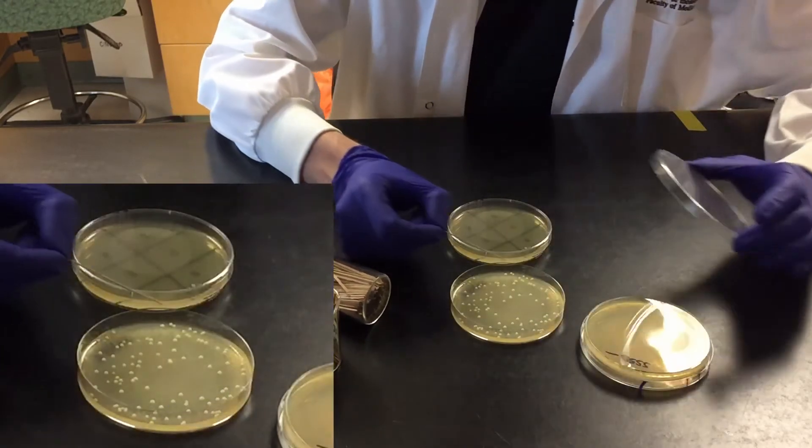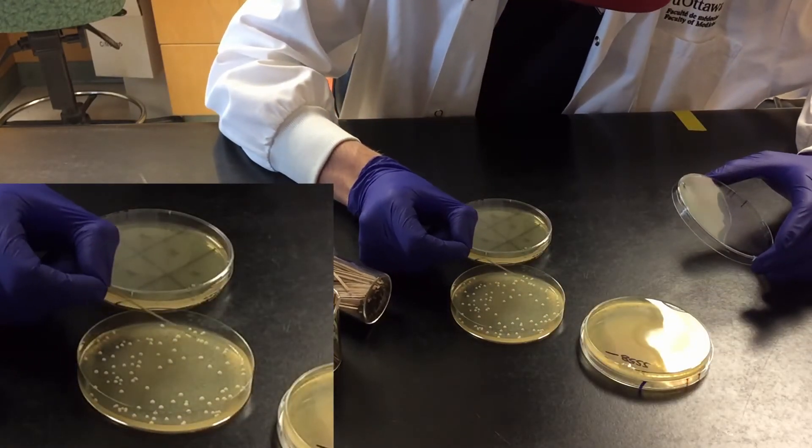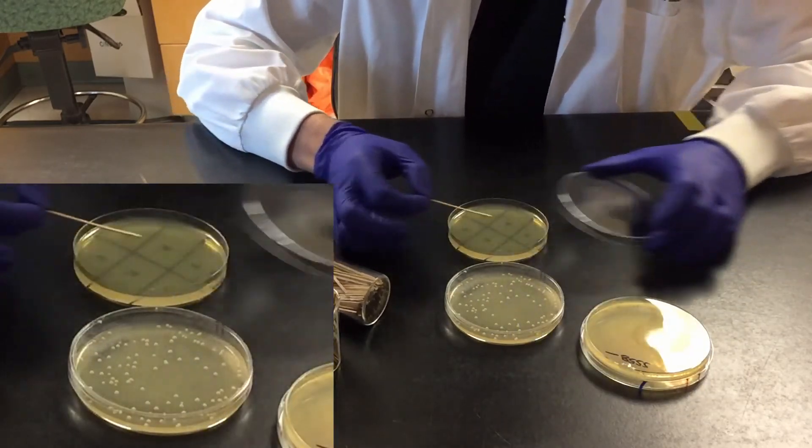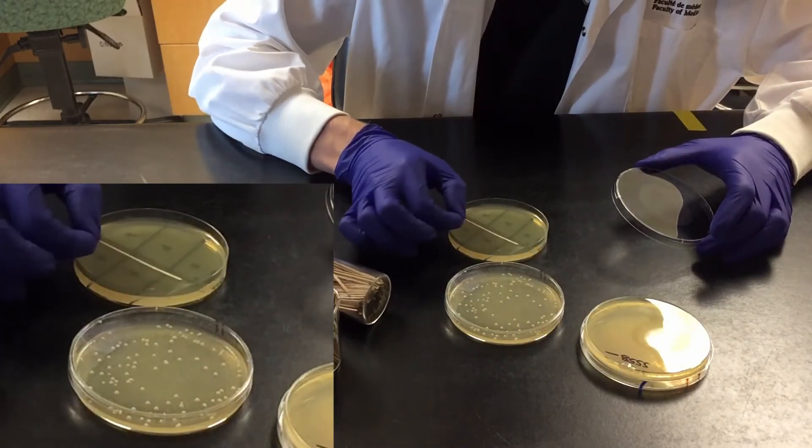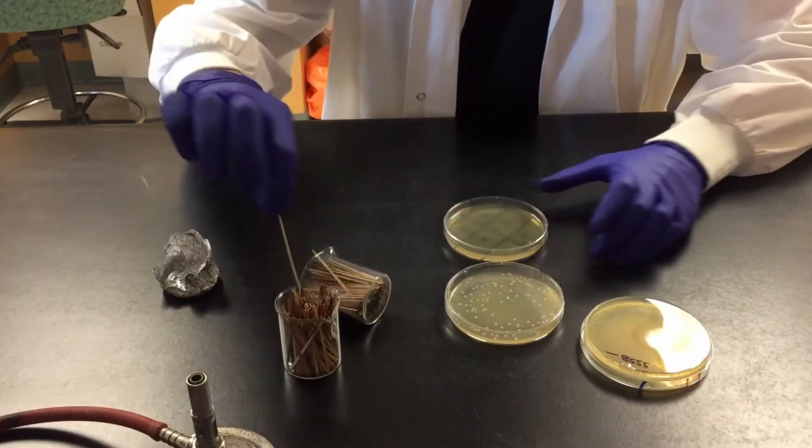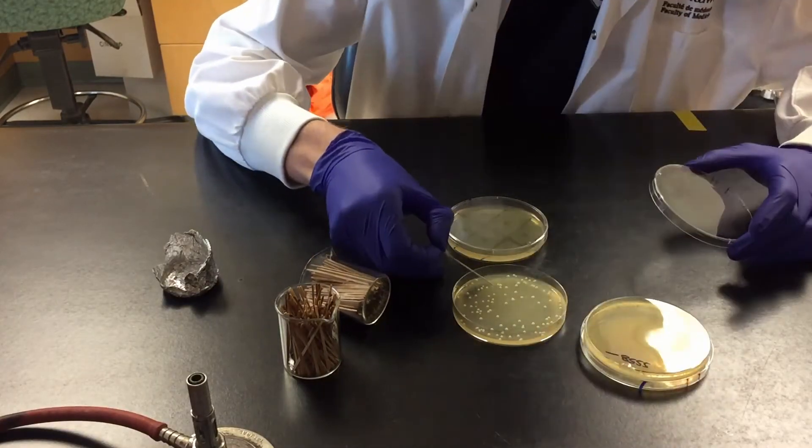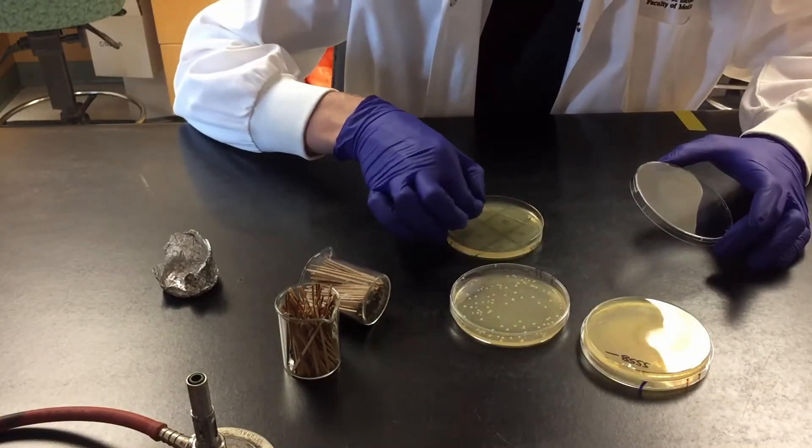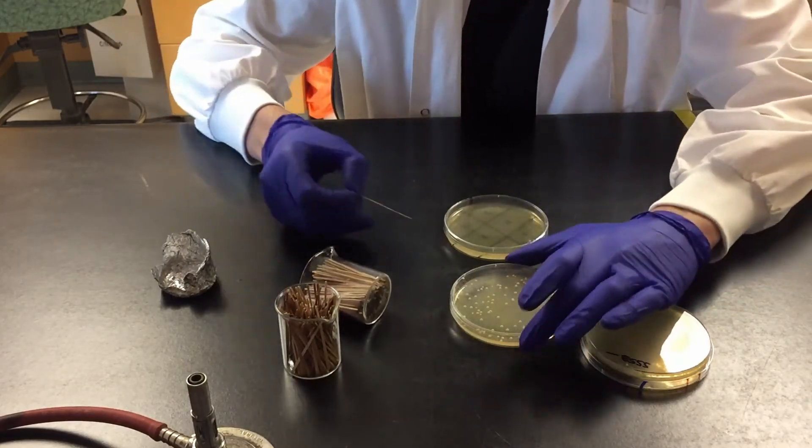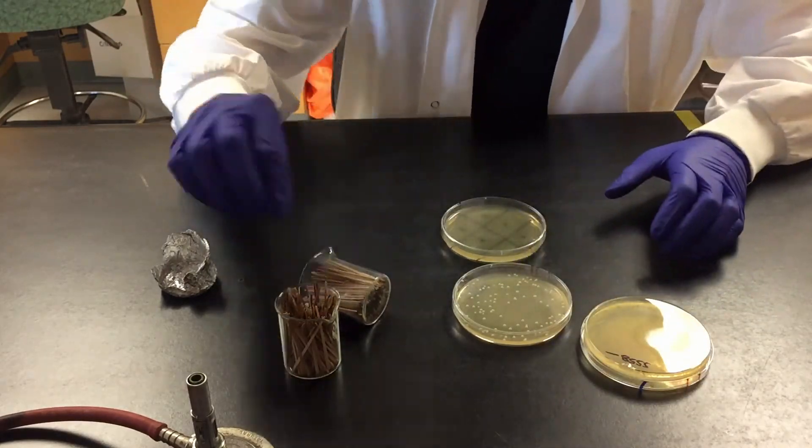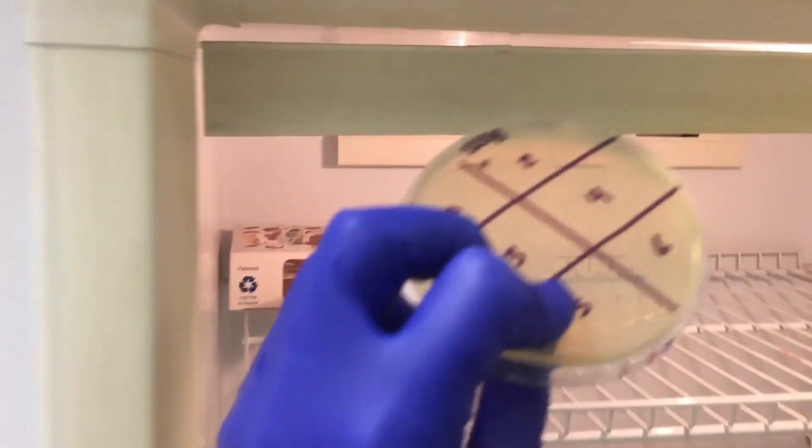Streak a bit of each positive colony onto a new plate with the same selection. Allow the cells to grow into a patch for 1 to 2 days.